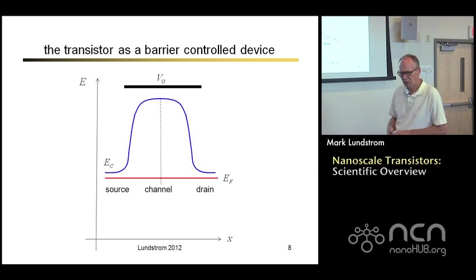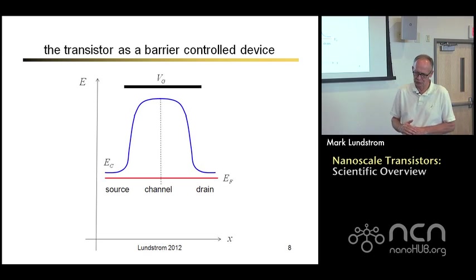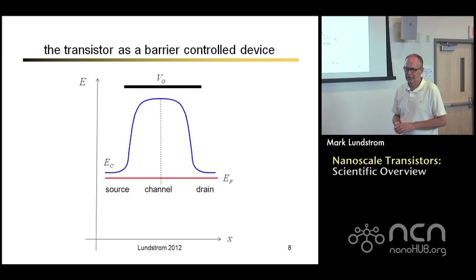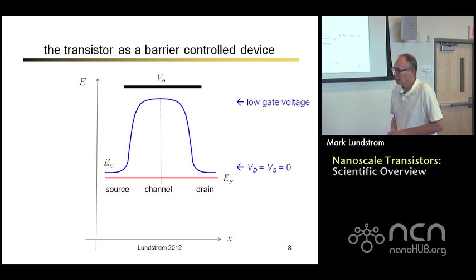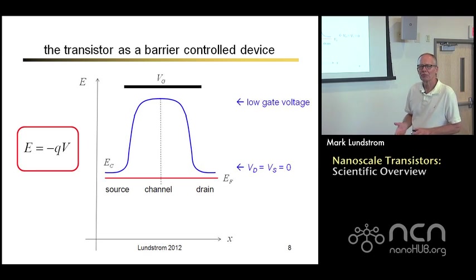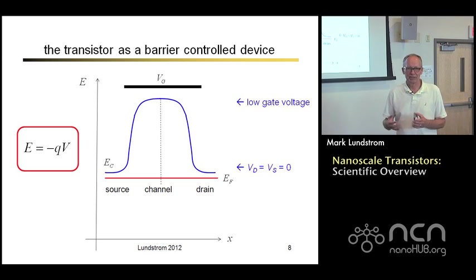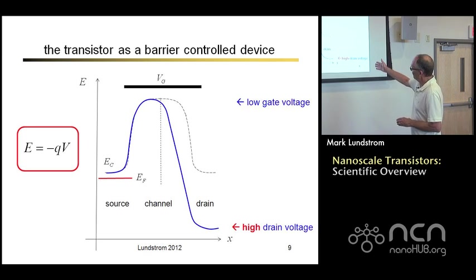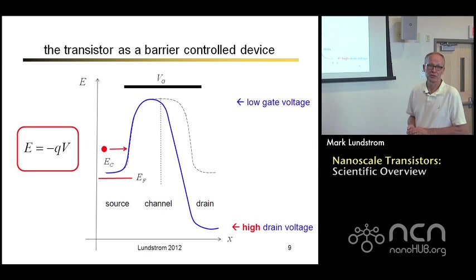The red line is the Fermi level — for those familiar with basic semiconductor physics, that tells us what energy levels the electron states are filled up to. You can see the electron potential energy, the bottom of the conduction band in the source, with a big barrier that prevents electrons from flowing into the channel, and then the energy goes down into the drain as well. This is plotted under a low gate voltage with no voltage applied between the drain and the source.